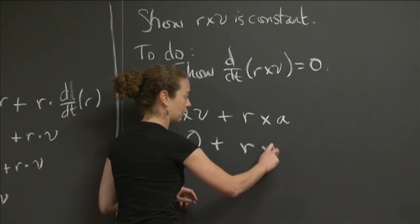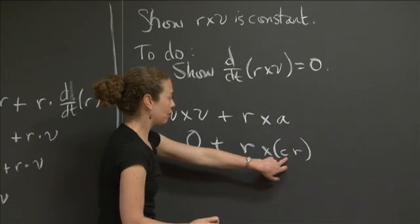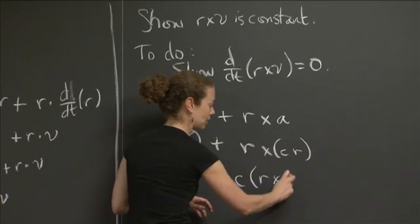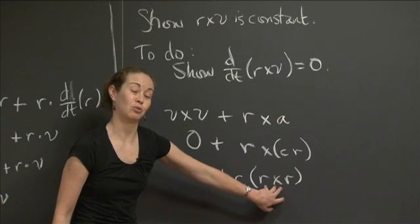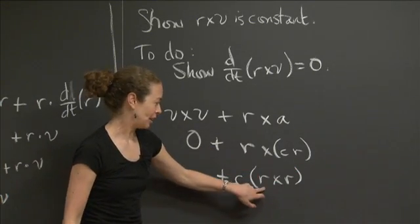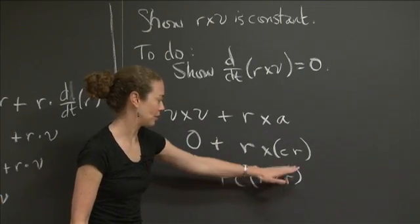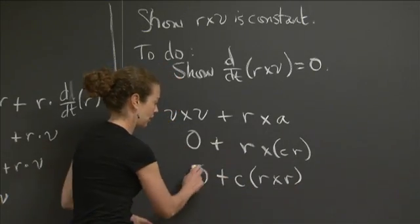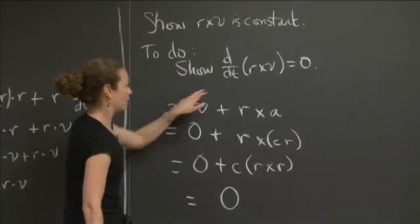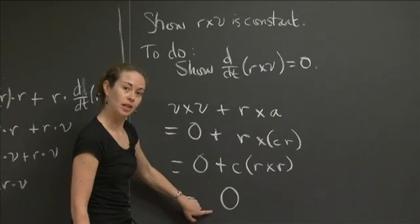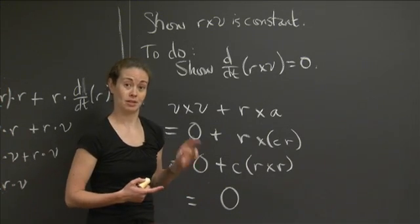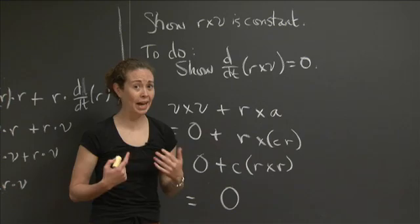We're left with r×a. We know from the given information that a = c·r, so r×a = r×(c·r) = c(r×r). And r×r = 0 by the same argument — r points in the same direction as itself. So r×a = 0 as well. Therefore d/dt(r×v) = 0 + 0 = 0, which confirms that r×v is constant. The cross product of r and v, which are orthogonal vectors lying in the xy-plane, is always the same vector.